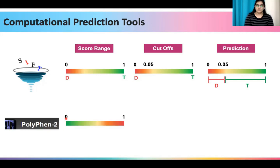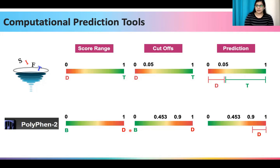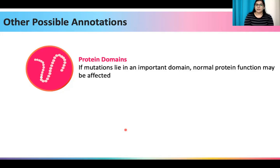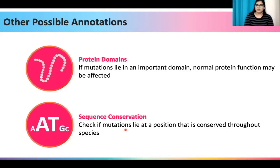For PolyPhen, a score between 0.9 and 1 is predicted as damaging, a score between 0.453 and 0.9 is possibly damaging, and anything below that is benign. Apart from these annotations, we can also annotate other features such as protein domains — if mutations lie in an important protein domain, normal protein function may be affected — and sequence conservation, in which we check if mutations lie at a position that is conserved throughout species, implying that any change at this position may affect normal gene function.